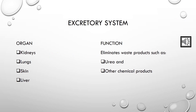The excretory system is a system of an organism's body that performs the function of excretion, the process of getting rid of waste material. Every living organism generates waste in its body and has the mechanism to get rid of it. The organs involved are kidney, lungs, skin, and liver. It eliminates waste products such as urea and other chemical products.